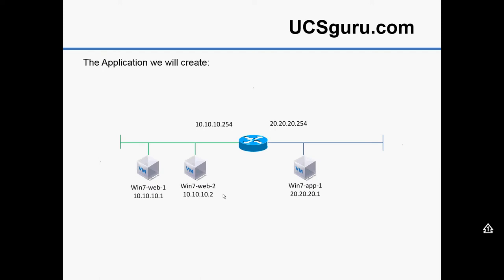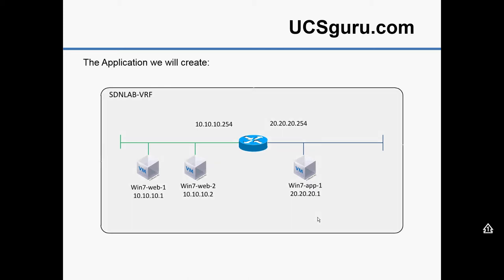The configuration we're going to be building today is fairly simple - we're going to have two subnets with a couple of web VMs on them, essentially a router in between, and a VM in an application tier. That's how it would look in a traditional environment, and the way we apply that to Cisco ACI would be to create our VRF - a construct that all traditional networkers will be familiar with.